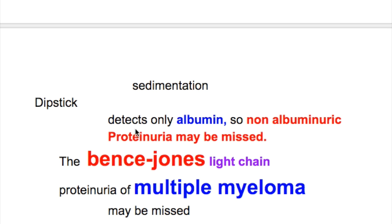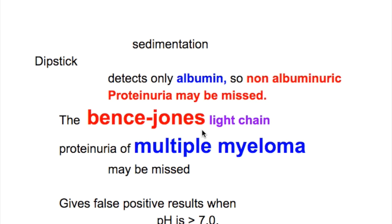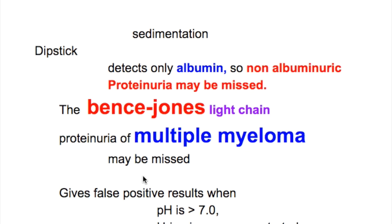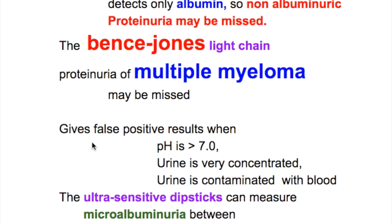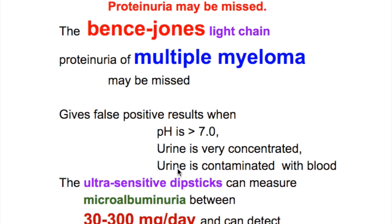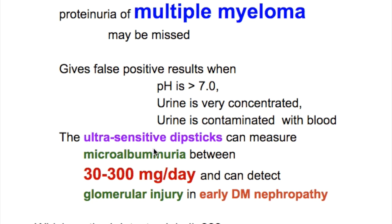What does a dipstick detect? The dipstick detects only albumin, so non-albuminuric proteinuria may be missed. The Bence Jones light chain protein of multiple myeloma may be missed with the dipstick test. The dipstick gives false positive results when pH is more than 7, urine is very concentrated, or urine is contaminated with blood. The ultrasensitive dipstick can measure microalbuminuria between 30 to 300 mg per day and can detect glomerular injury in early diabetic nephropathy.